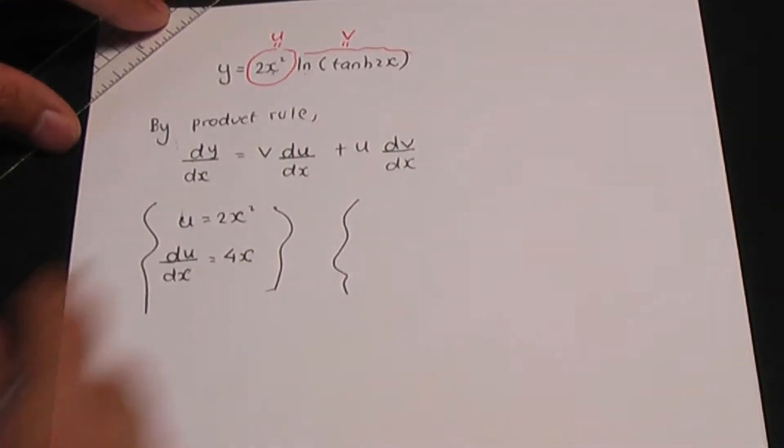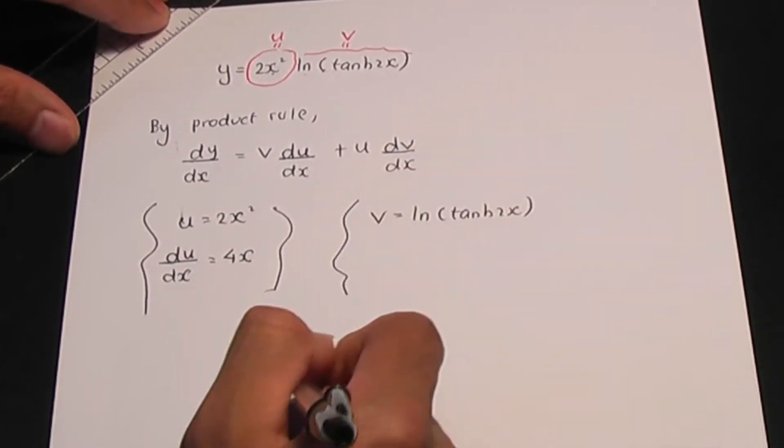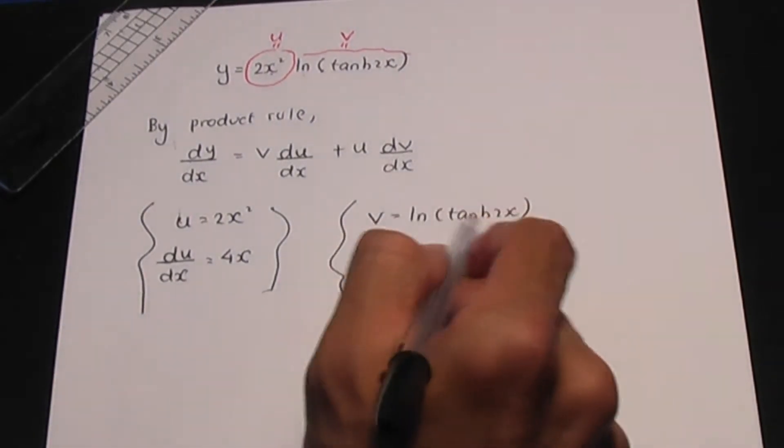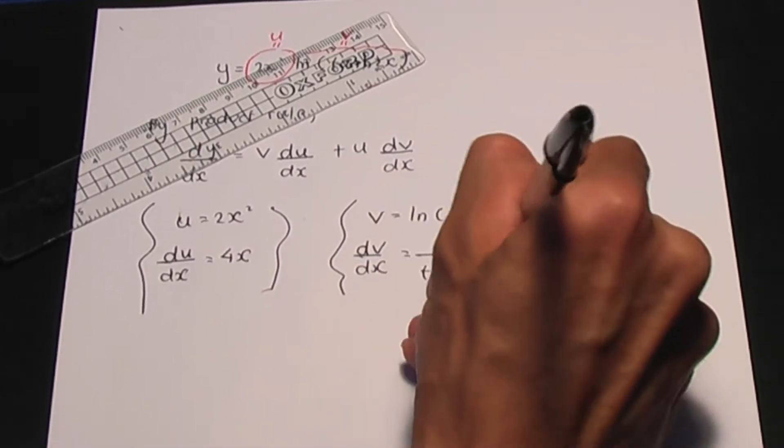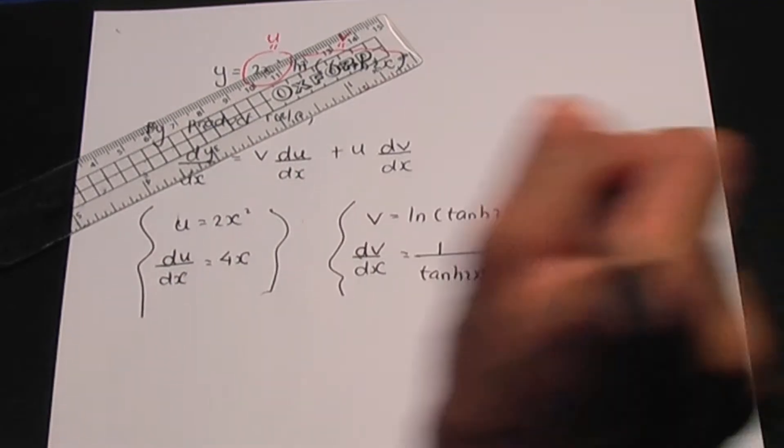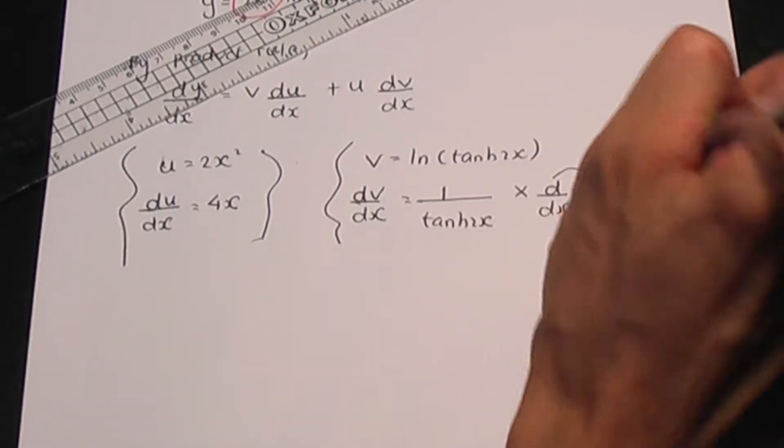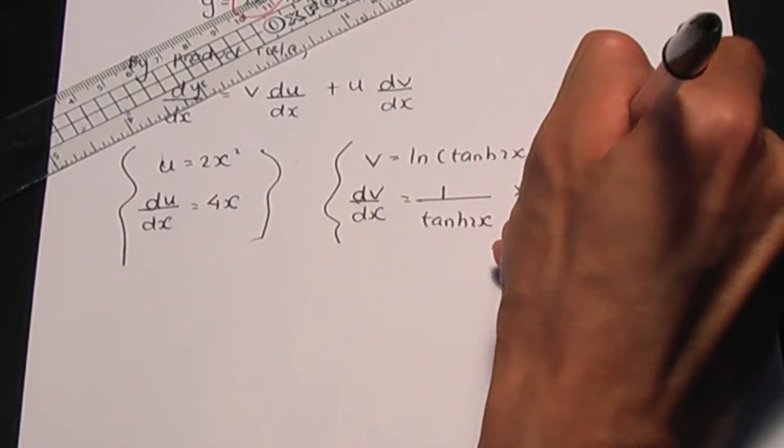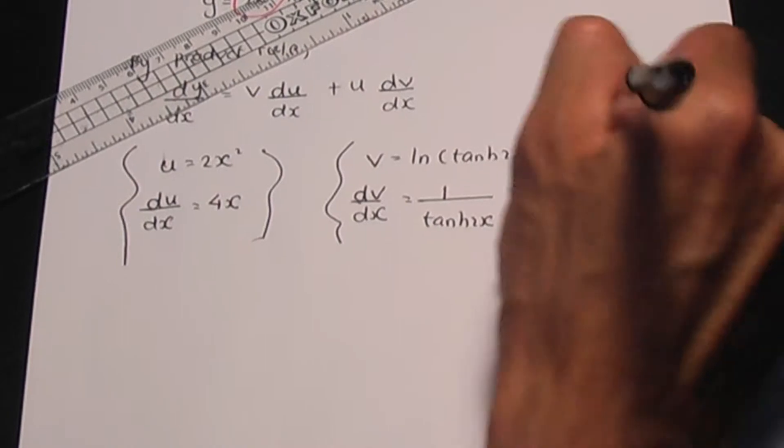Let's do another side calculation. So v is ln hyperbolic tan 2x. Let me calculate dv over dx. If I differentiate ln hyperbolic tan 2x, it's 1 over hyperbolic tan 2x multiplied by the derivative of hyperbolic tan 2x. Be careful when you work out the derivative of that function. Remember when we differentiate hyperbolic tan, it's hyperbolic sec squared, so it's hyperbolic sec squared 2x, but you need to multiply by the derivative of 2x which is 2. So that follows the chain rule.